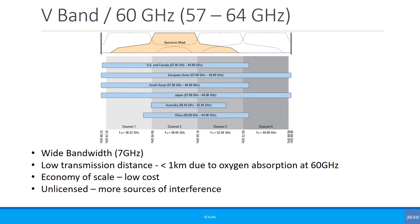But because it's 60 GHz, we have oxygen absorption, so transmission distances are very low — less than one kilometer. This frequency has been used for a while with WiGig and does not cost a lot, so there is economy of scale. But because it's unlicensed, there are more chances of interference from known and unknown sources.